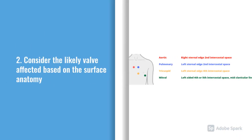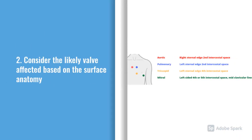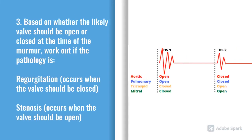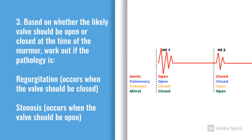Based on your surface anatomy — the 'All Prostitutes Take Money' mnemonic — work out which valve is most likely affected. Then, using the basic information about which valves are open or closed during systole and diastole, determine whether the likely valve affected is open or closed at the time of the murmur. Tie that information together to give you a likely diagnosis.